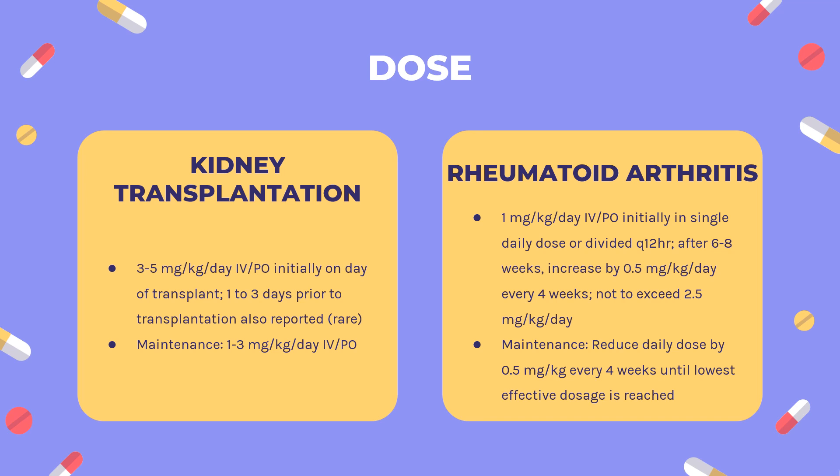Dose — Kidney transplantation, prevention of transplant rejection: 3–5 mg/kg/day orally, initially on day of transplant (1–3 days prior to transplantation also reported, but rare). Maintenance: 1–3 mg/kg/day orally.